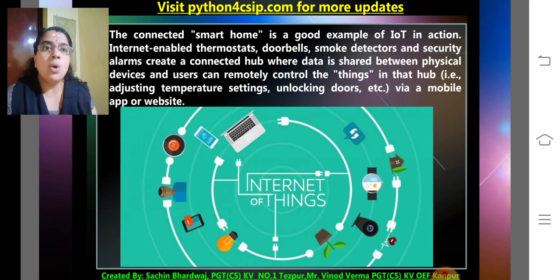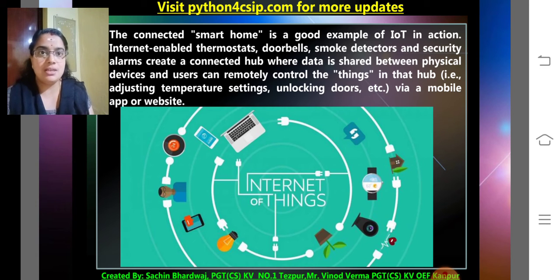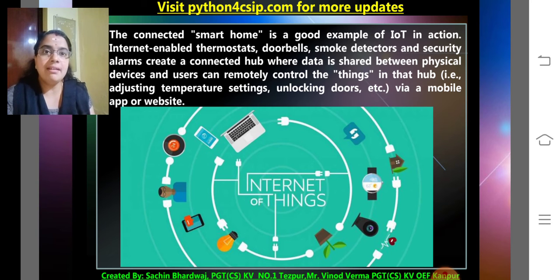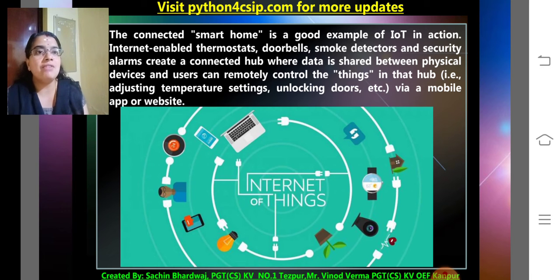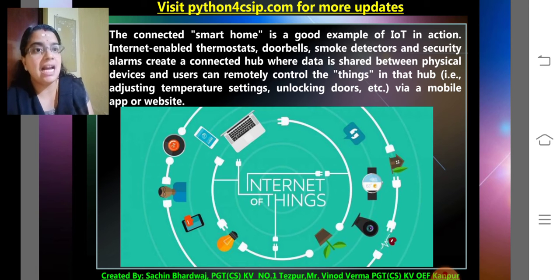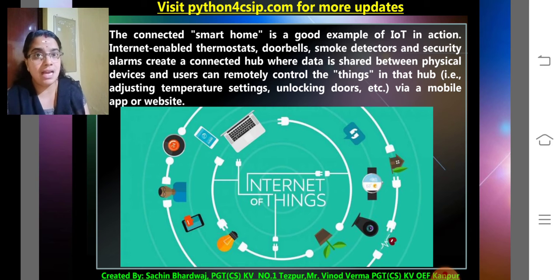The connected smart home is a good example of IoT in action. Internet-enabled thermostats, doorbells, smoke detectors, and security alarms create a connected hub where data is shared between physical devices, and users can remotely control things in the hub — adjusting temperature settings, unlocking doors, etc. — via a mobile app or a website.